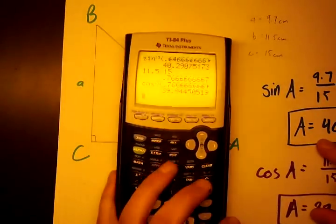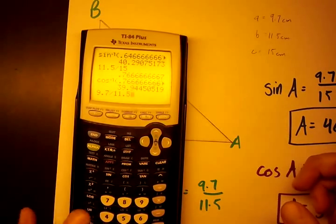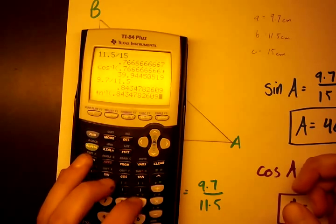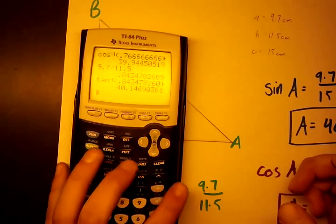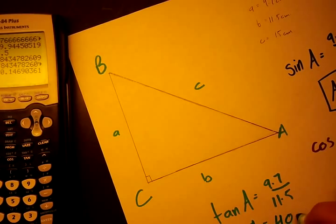So again, last time with our calculator. 9.7 divided by 11.5. Take the second tangent of that. That's going to be 40.1. So according to that, A equals 40.1 degrees.